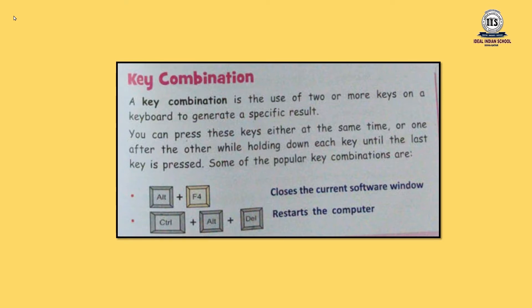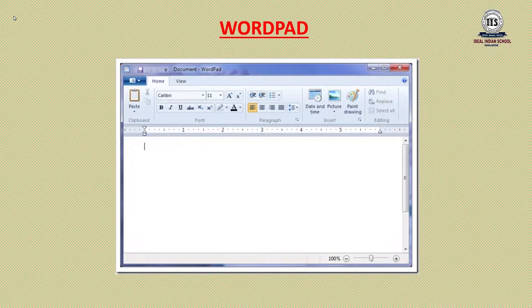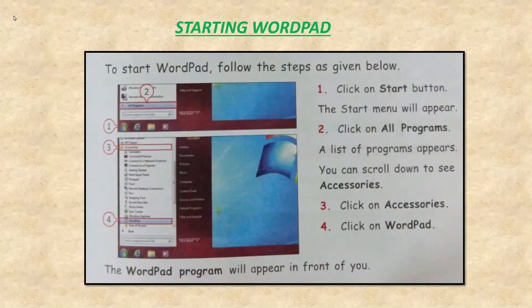Now children, after you have learnt everything about the keyboard, let us start to work on it with a special program called WordPad. What is WordPad? A WordPad is a word processing program that is used for typing in a computer. You can type letters, words, sentences, and numbers in it. WordPad can make your document more beautiful and attractive. Now let us see the steps to begin WordPad.